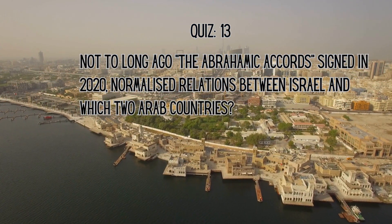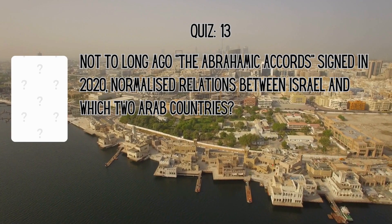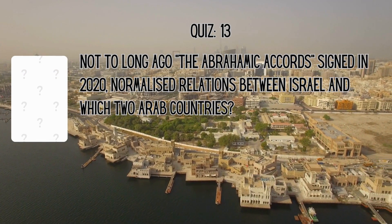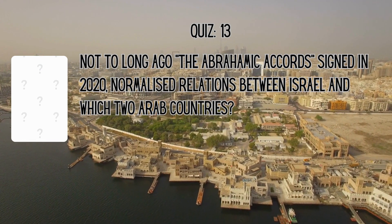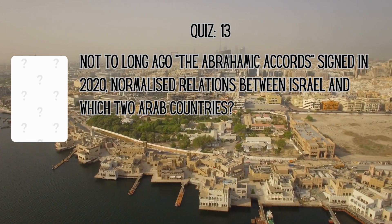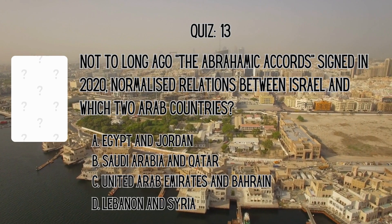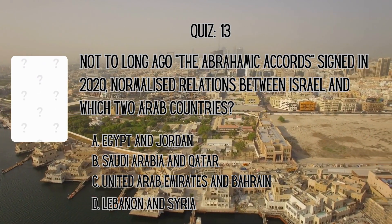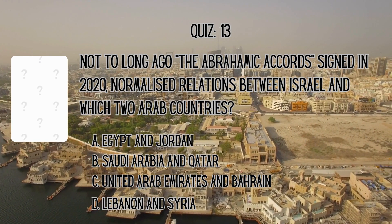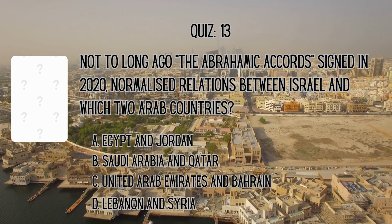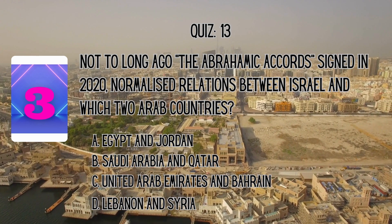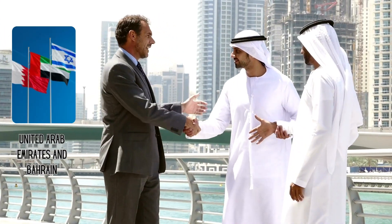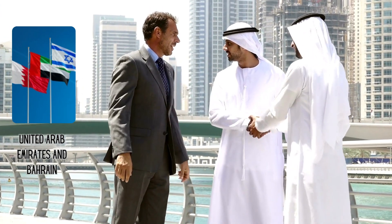Lastly, let's look at current affairs in the region. Not too long ago, the Abraham Accords were signed in 2020. They normalized relations between Israel and which two Arab countries? Is it A. Egypt and Jordan, B. Saudi Arabia and Qatar, C. United Arab Emirates and Bahrain, or D. Lebanon and Syria? The correct answer is United Arab Emirates and Bahrain.